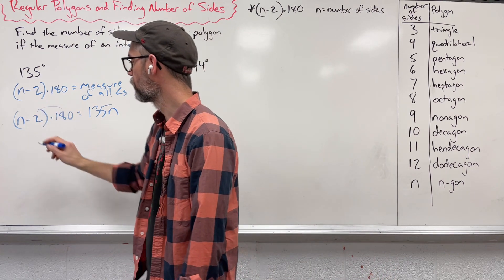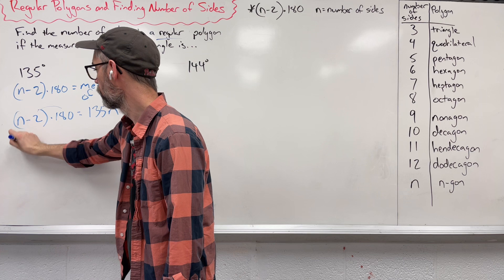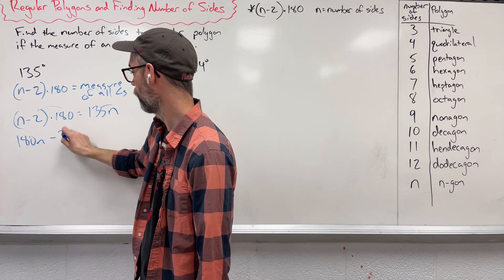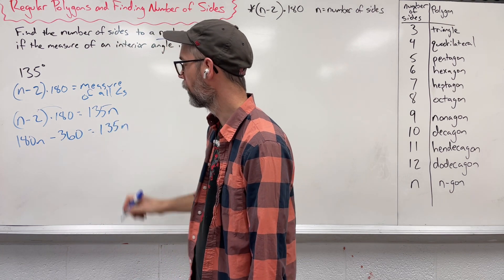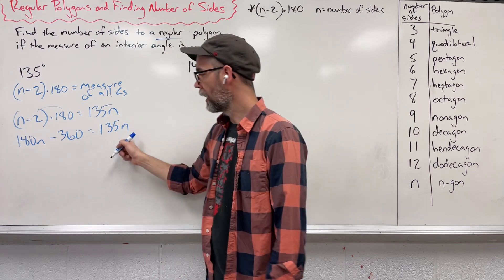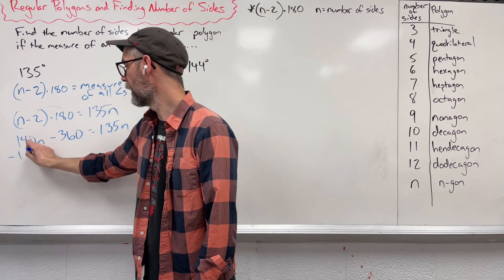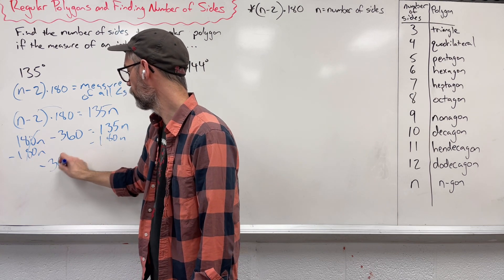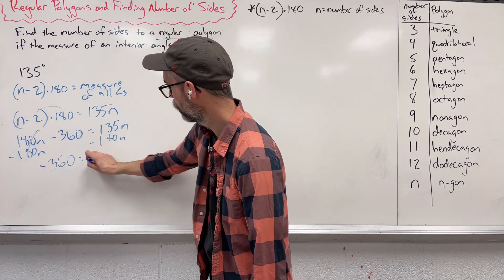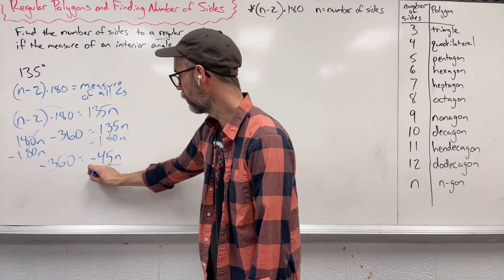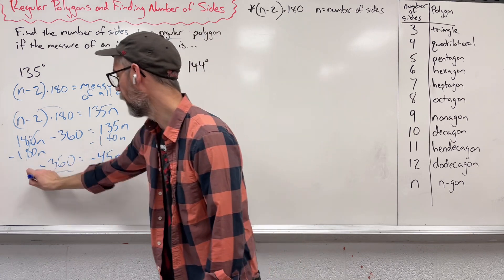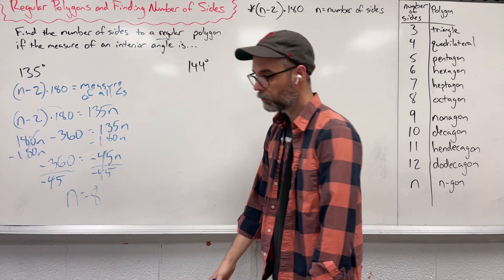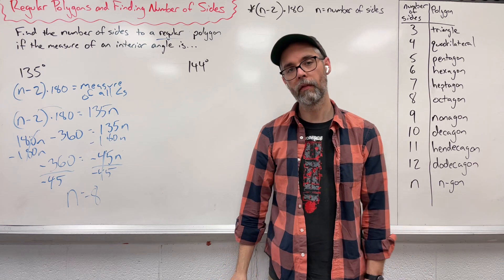We're going to distribute this. We're going to say 180 times n gives us 180n. 180 and negative 2 gives us negative 360 equals 135n. Let's move all of our n's to one side. I'm going to say negative 180n minus 180n, leaving us with negative 360 equals negative 45n. And then let's divide by that negative 45. The negatives cancel and we're left with n equals 8. We now found out that we have eight sides within this figure.